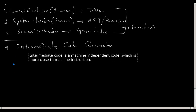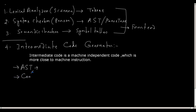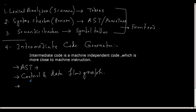Some people use the abstract syntax tree directly as an intermediate code language. Some use what we call a control and data flow graph to extract information and represent it as a language independent representation. The control and data flow graph is a language independent representation of the high-level program. The third, which is widely used as intermediate code, is what is called three-address code.